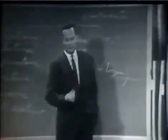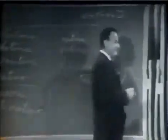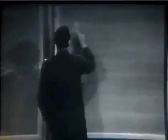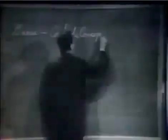Now I'm going to discuss how we would look for a new law. In general, we look for a new law by the following process. First, we guess it. Then we compute the consequences of the guess.